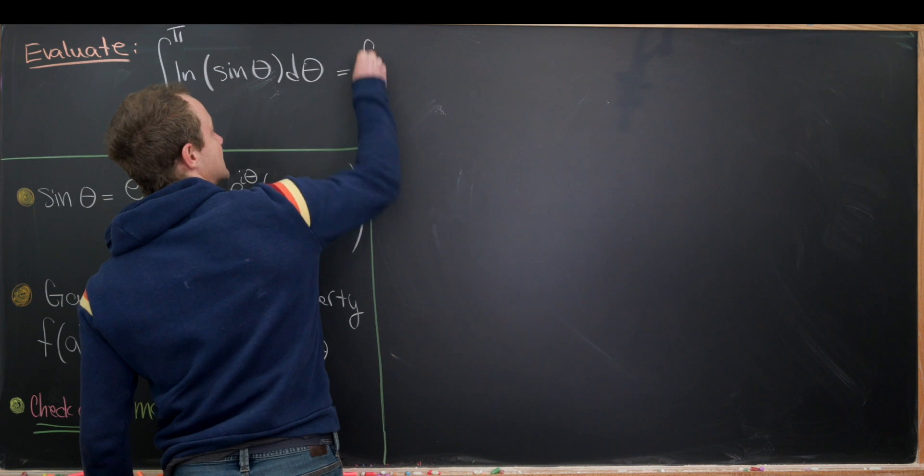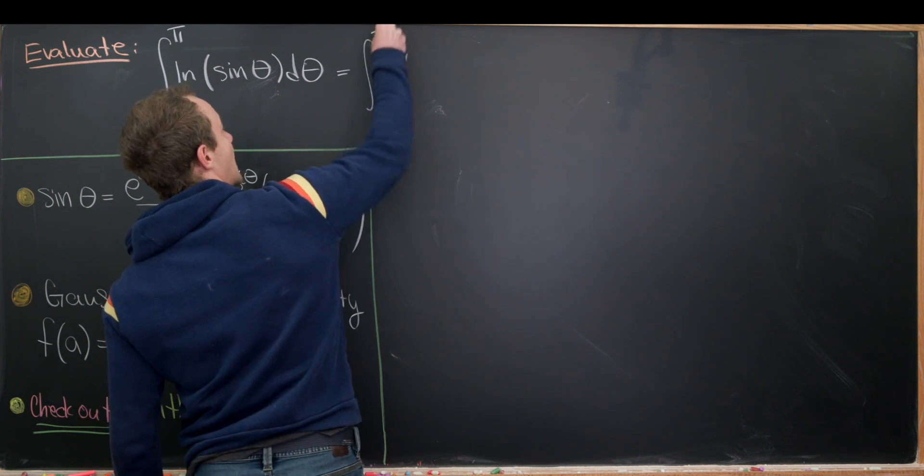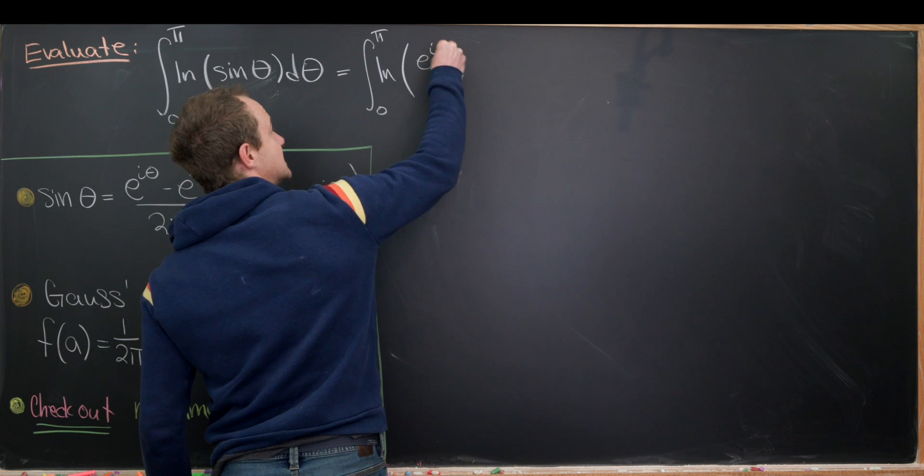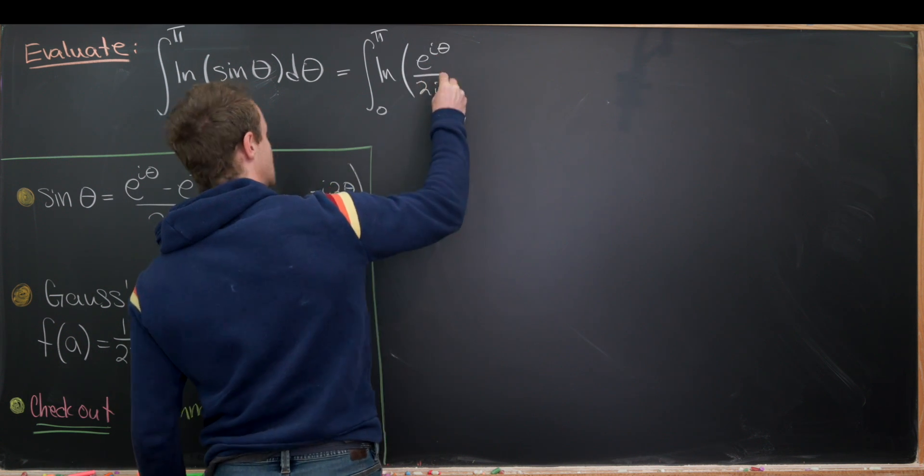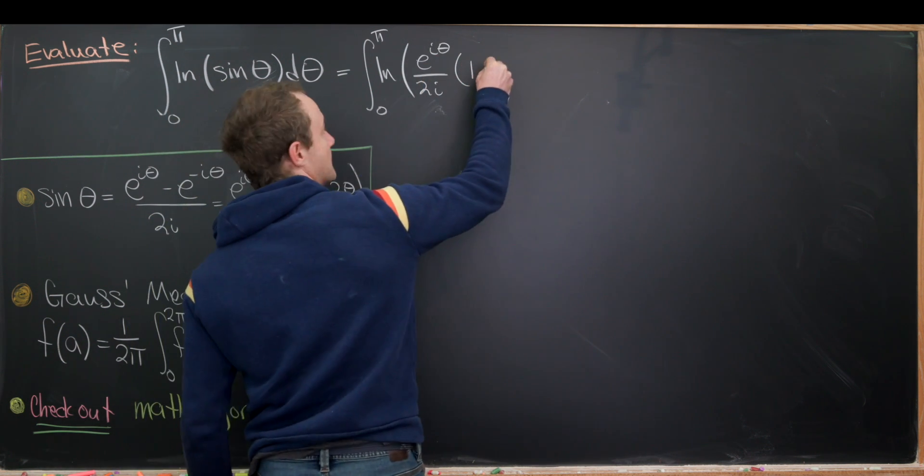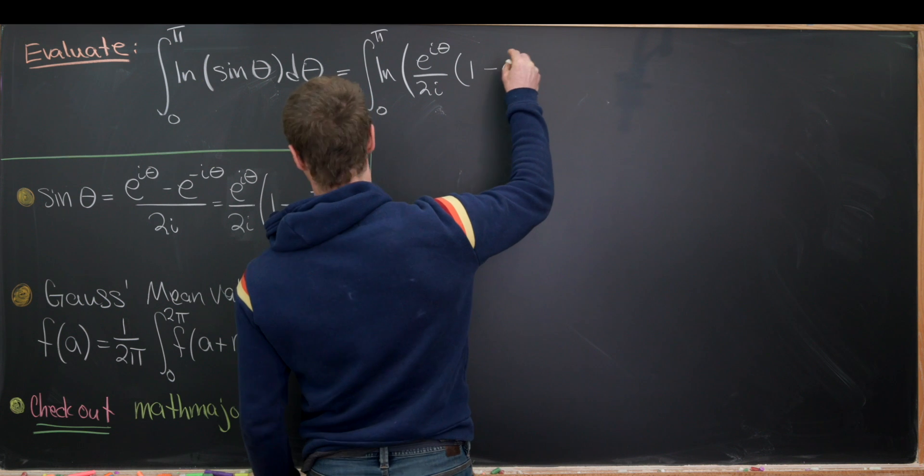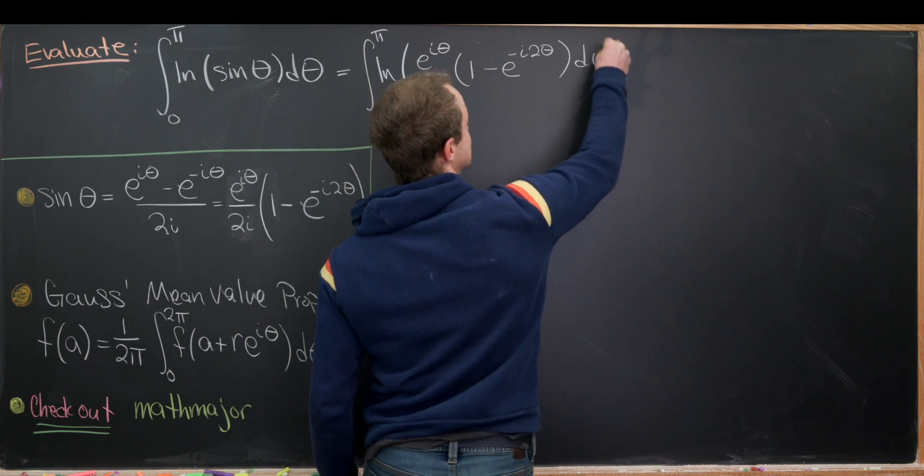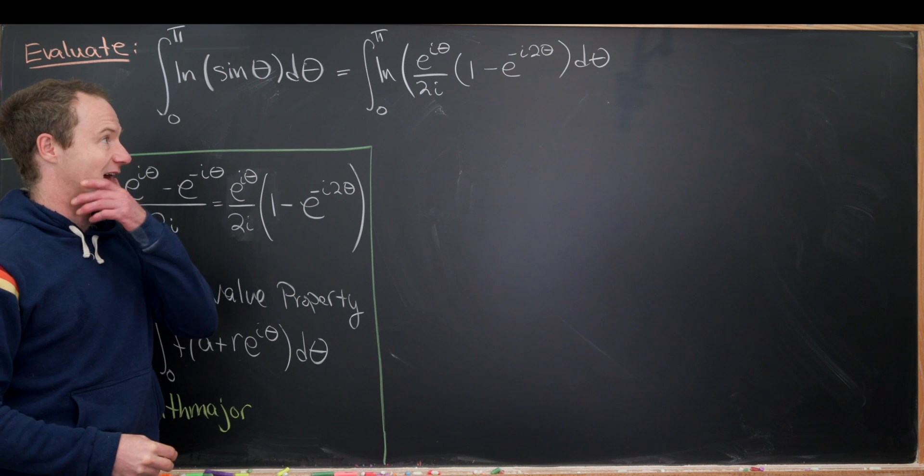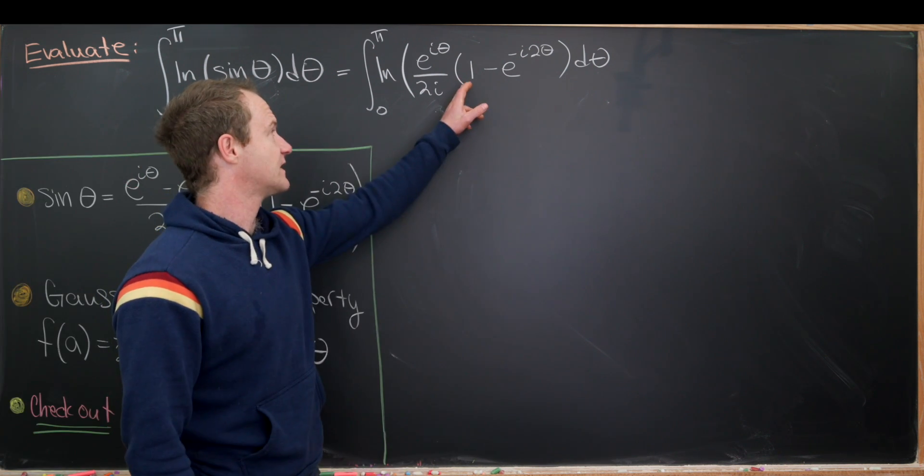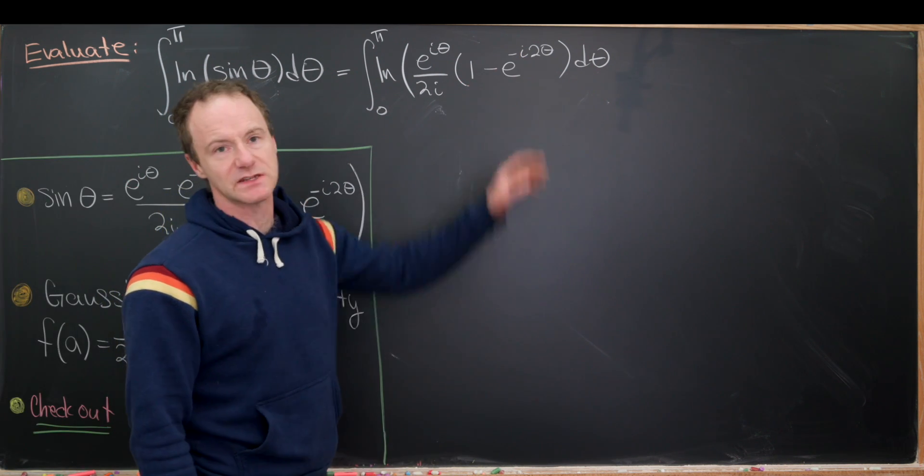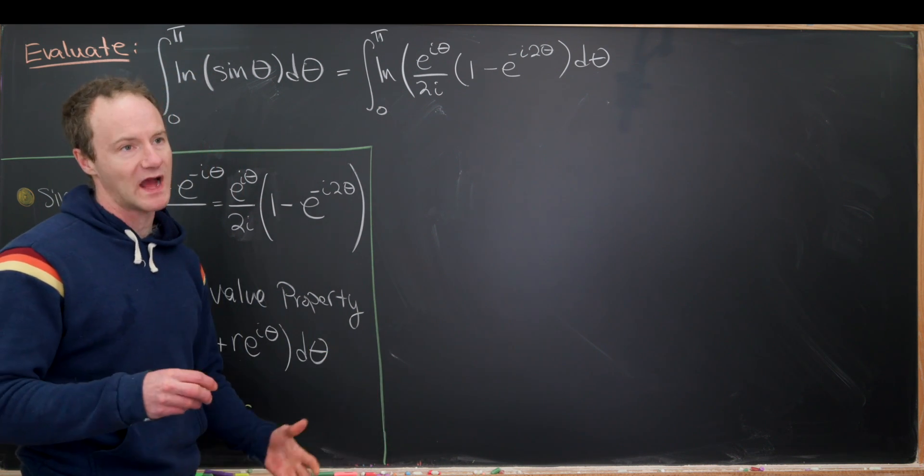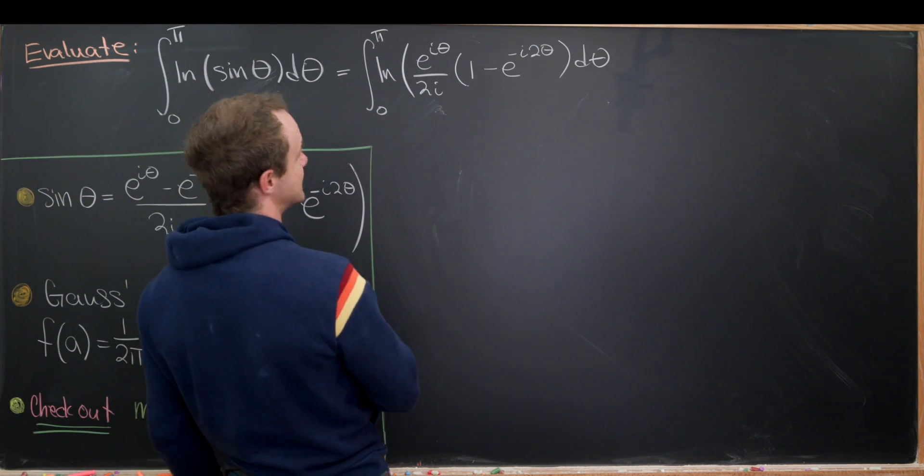So that means I have the integral from 0 to pi of the natural log of e to the i theta over 2i times 1 minus e to the minus i times 2 theta d theta. Okay, so we have something like that going on. But now instead of leaving this as 1 minus e to all of this stuff, I'm going to introduce a limit. And we'll maybe talk through why we need to do that after we get it written down.